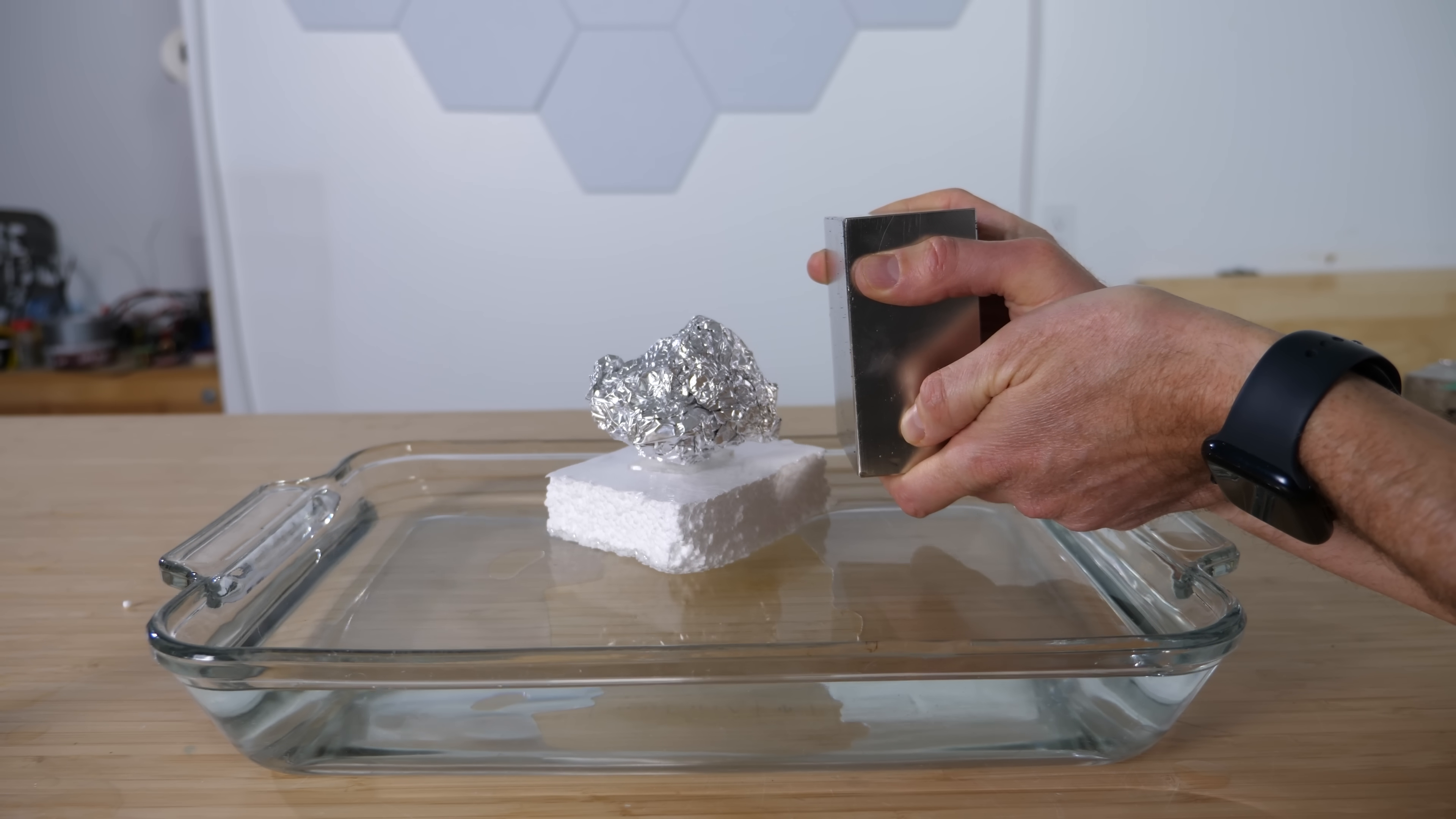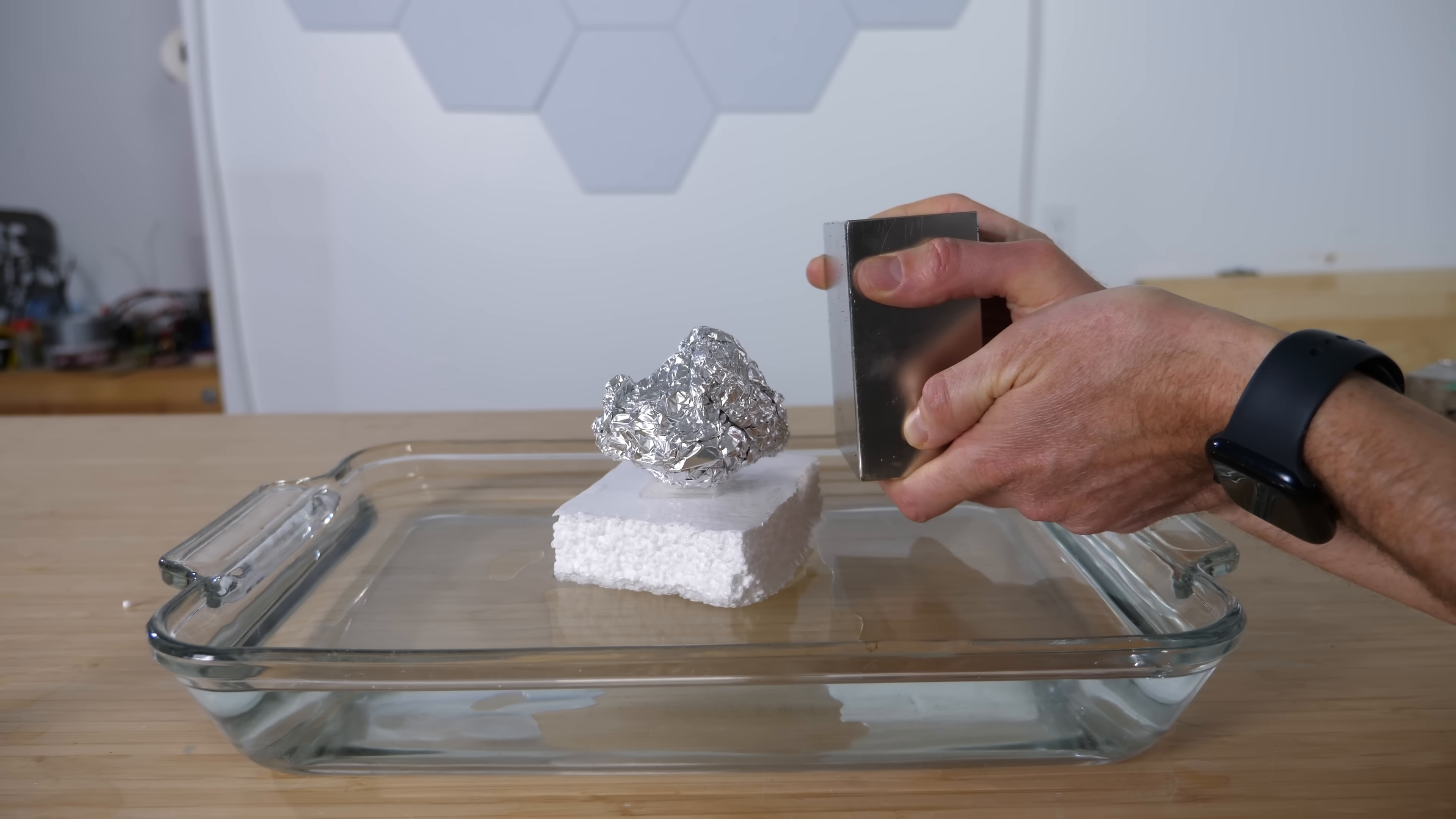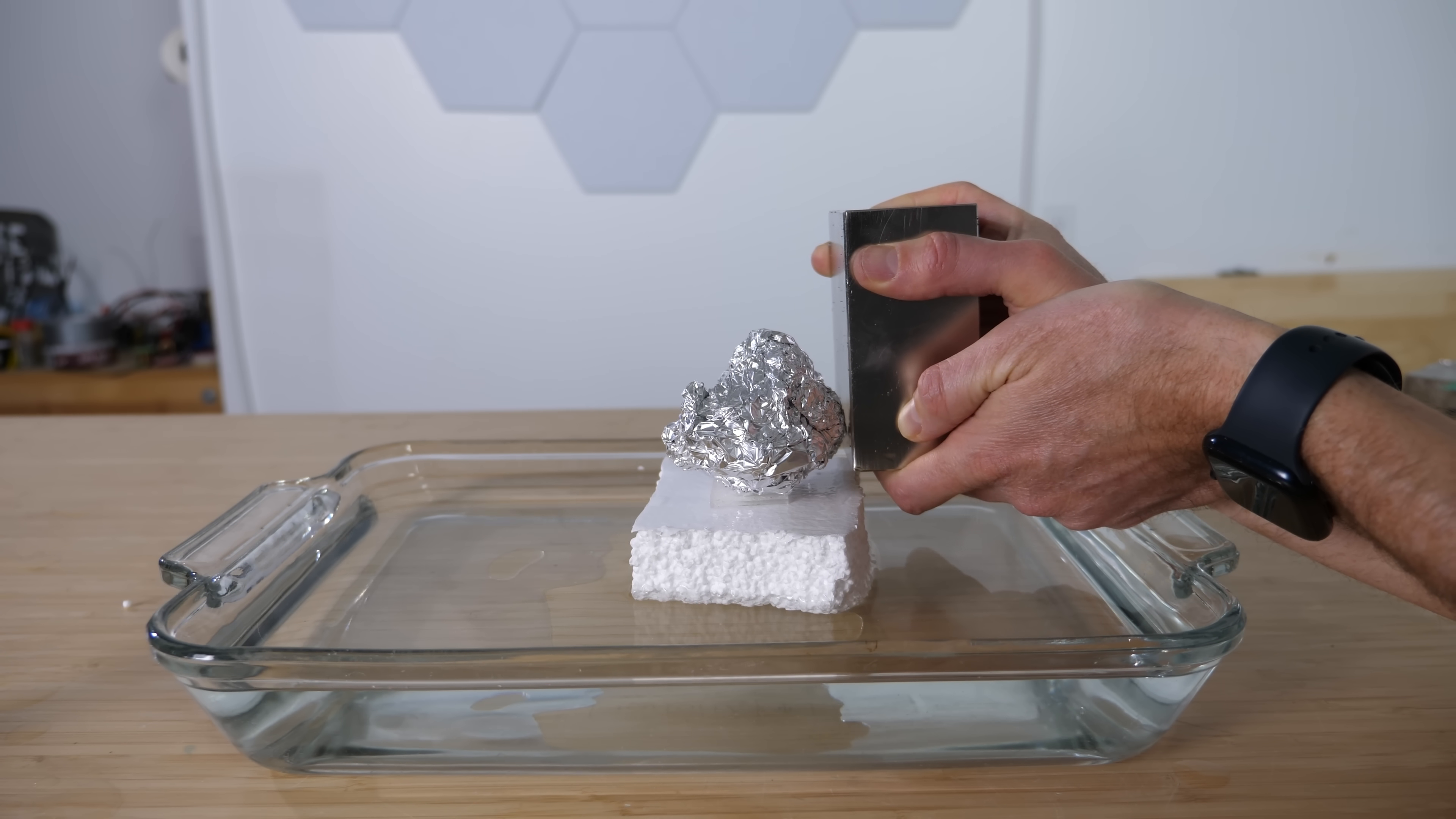A great example of a paramagnet is aluminum. It isn't naturally magnetic, but in a strong external field, its atoms align slightly, causing it to be attracted to a magnet.